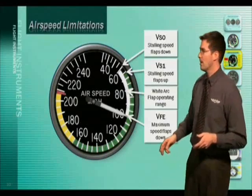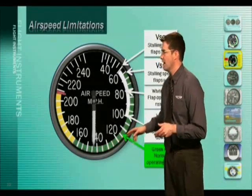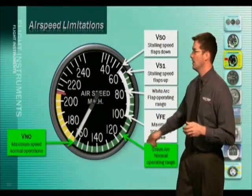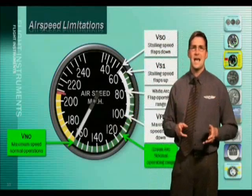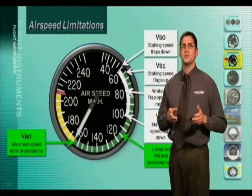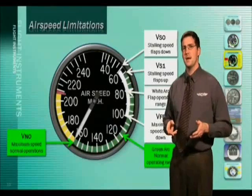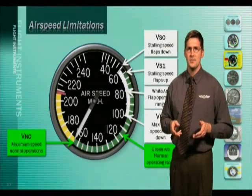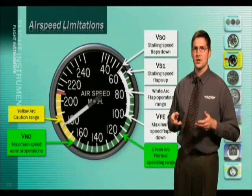The green arc represents the normal operating range of the aircraft. At the top of the green arc is a speed called VNO, which is the highest allowable airspeed under most operating parameters. You may from time to time head into the yellow arc if the air is very smooth, but just like a street sign, remember that yellow means caution.